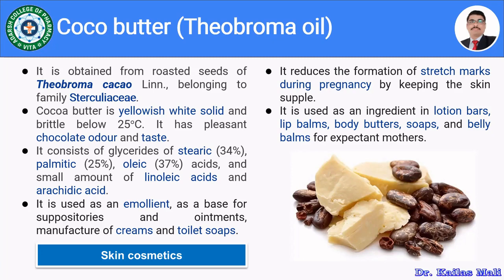Cocoa butter is being used as an emollient in various skin preparations, as a base for suppositories and ointments. It is used to prepare certain skin cosmetics like creams as well as toilet soap. Furthermore, it is going to reduce the formation of stretch marks during pregnancy by keeping the skin supple. It is used as an ingredient in lotion bars, lip balm, body butter, soaps and belly balm for expectant mothers.